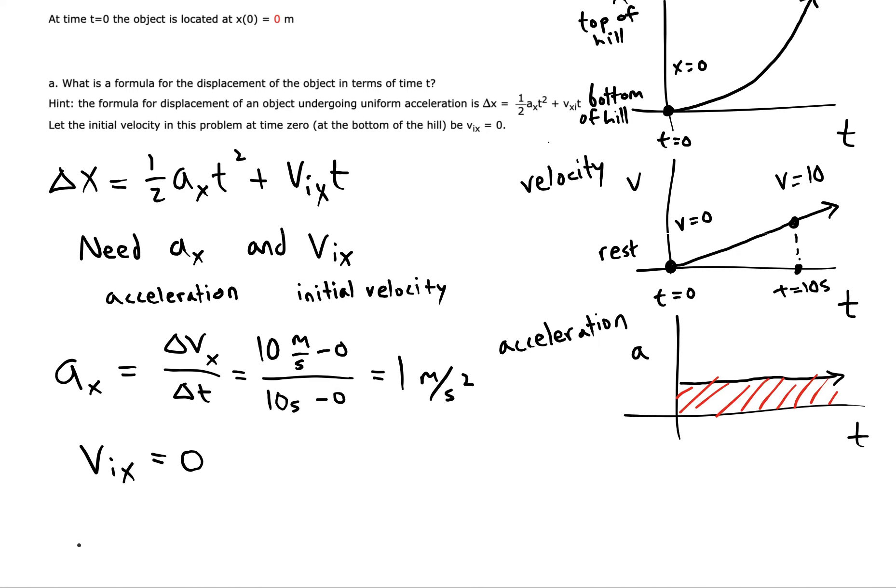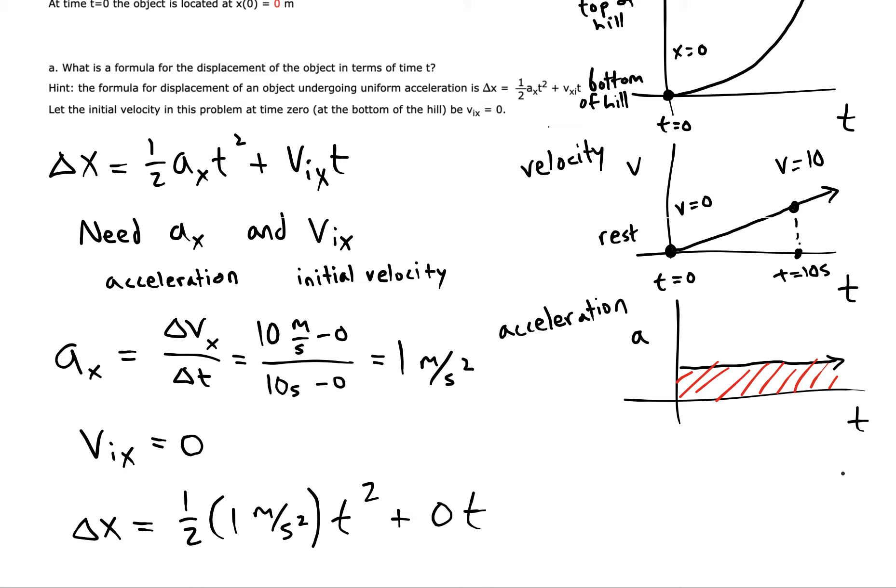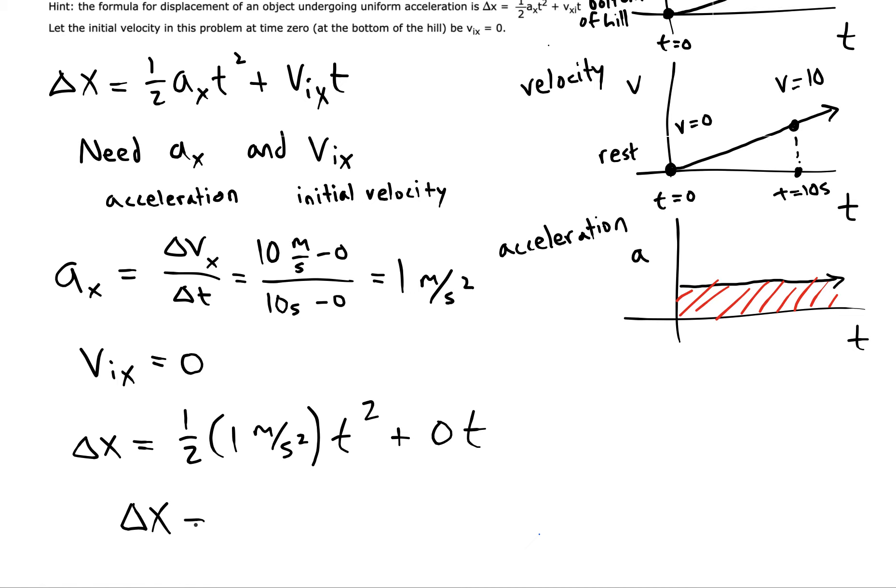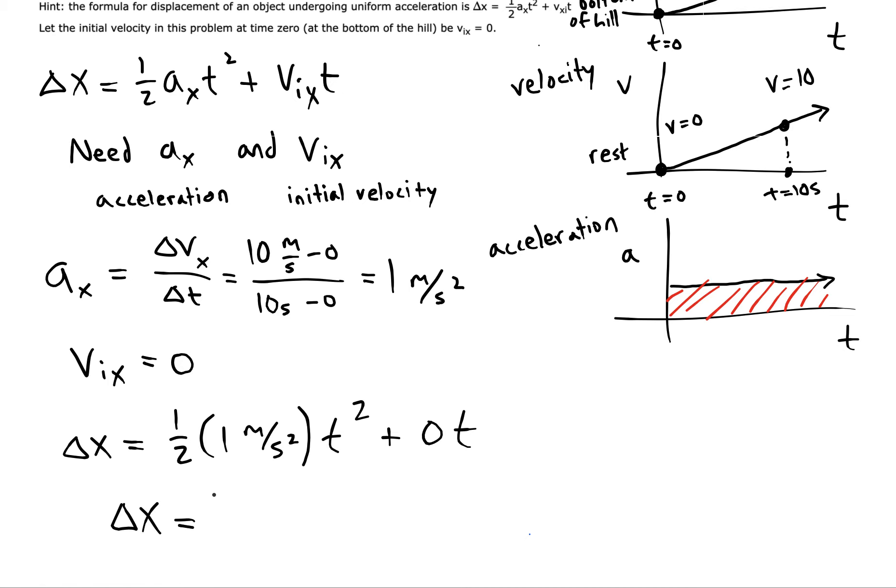And then your v_ix is gonna be zero because it starts from rest. So let's plug those in. You should get delta X equals one half one meter per second squared times T squared plus zero times T. Delta X will be one half T squared.